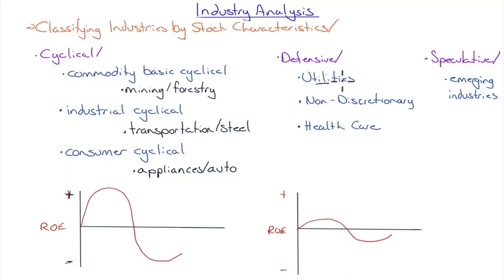Utilities are a prime example of defensive stocks: whether the economy is booming or in recession, people set their air conditioning to 72 degrees and take the same number of showers — utility consumption doesn't rise meaningfully in good times or fall in bad times. So utilities have very stable return on equity without the acceleration or drop-off of cyclicals. As we enter expansionary periods, money flows out of defensive stocks and into cyclical stocks; heading into recession, money flows the other way.